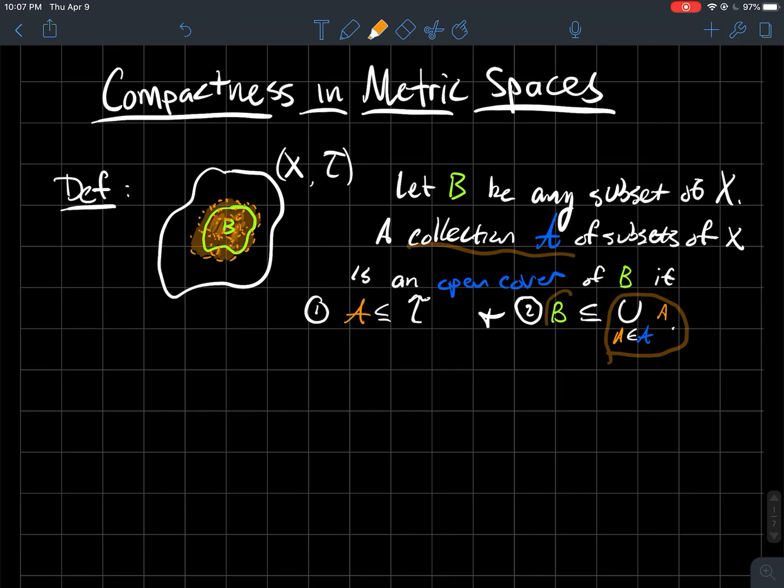what that means is that the union of all of those sets in your collection A, they should contain B as a subset. In my picture over here to the left, you see that the green set B is contained in the union of a whole bunch of orange sets. Cover means exactly like it sounds like those sets cover B.